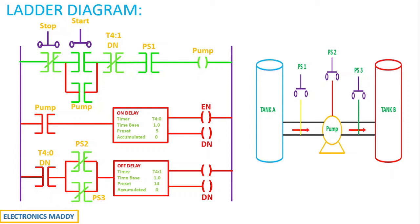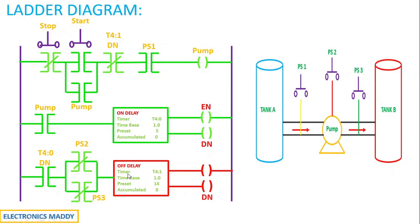If you want to know more about latching, I've already made a video on that — please do watch it. Similarly, the same address is used for the on-delay timer rung as well, this contact gets energized, and the rung gets energized. The on-delay timer gets energized. Once the on-delay timer is energized, the enable bit becomes high instantly according to its working, and the timer starts counting the time delay — I've set it as 5 seconds. After 5 seconds, the done bit goes high. Once the done bit goes high, the same address T40 done bit is used, and the off-delay timer is now energized.